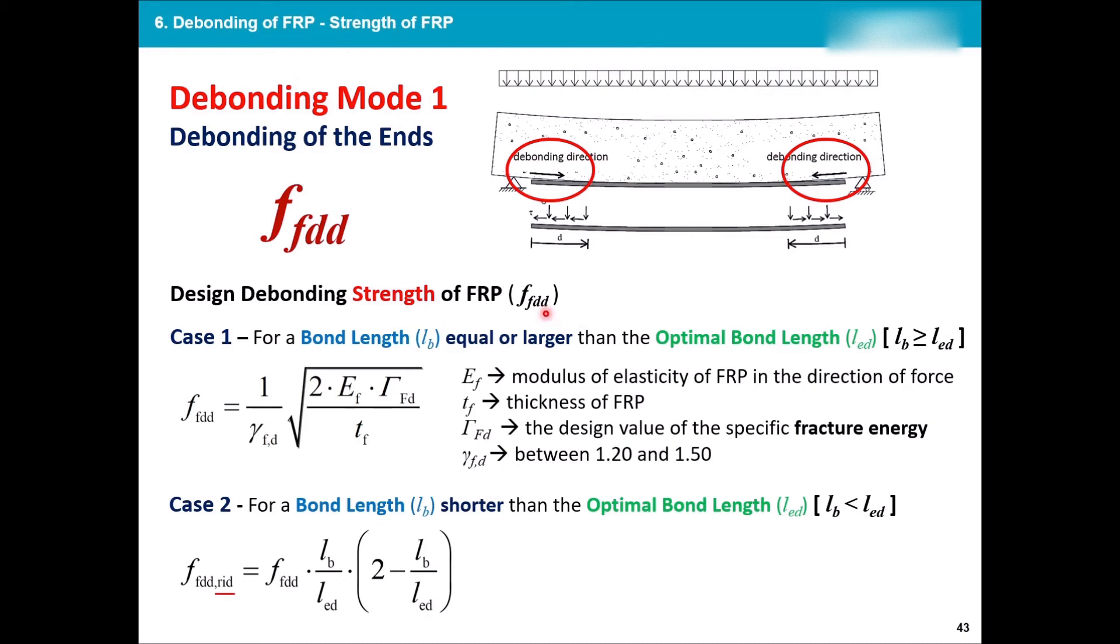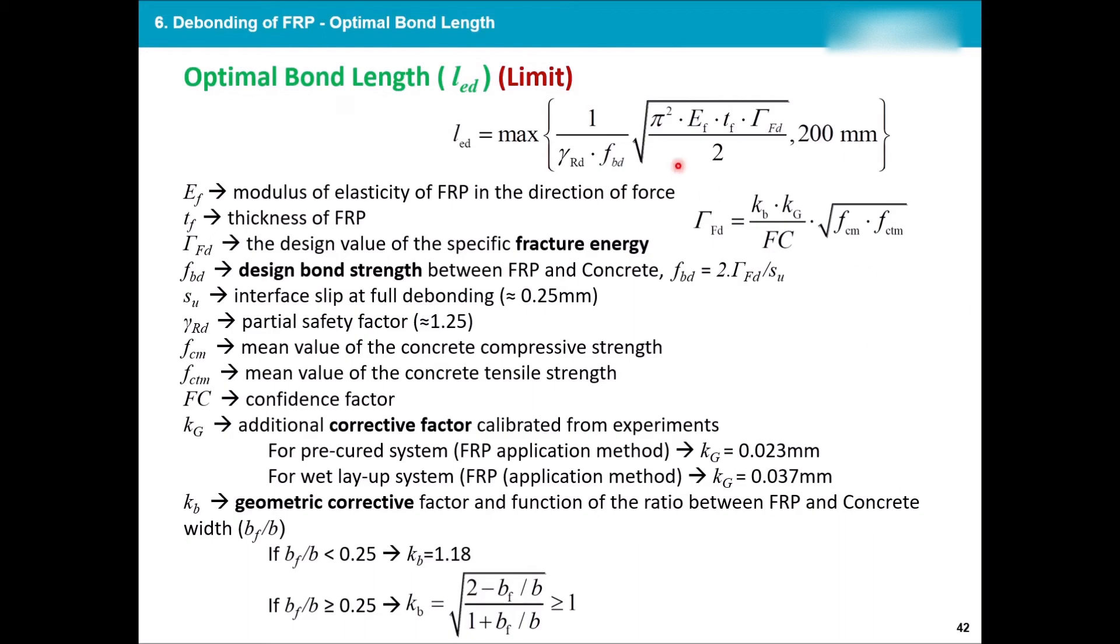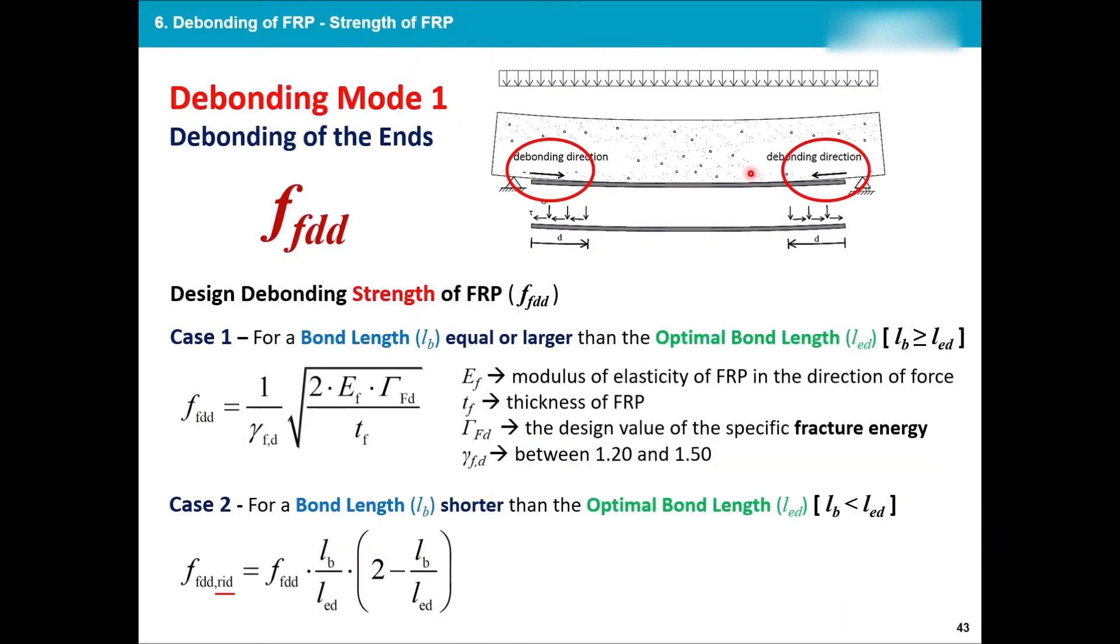Any of these will affect the strength of my FRP. Now, strength of FRP is very important. And in the coming slides, you will see that I continuously use this strength to see whether my design is sufficient or not. This strength, or the design debonding strength of FRP, is affected whether you have Mode 1 debonding or you have Mode 2 debonding. The Mode 1 itself has two cases, whether the bond length is equal or larger than that optimal bond length that we saw, so this guy, whether they are bigger than this or smaller than this. If they're equal or larger, then the strength is calculated using this formulation.